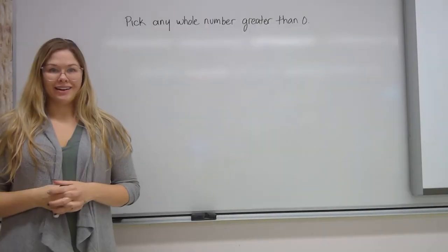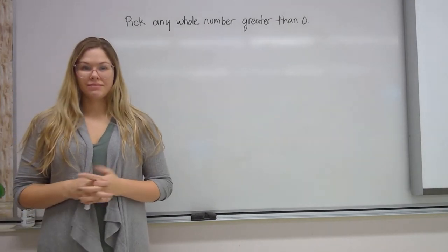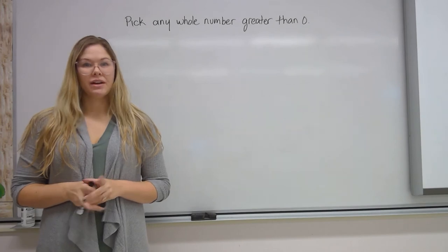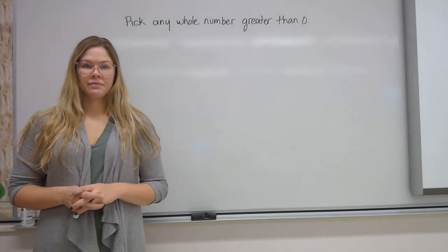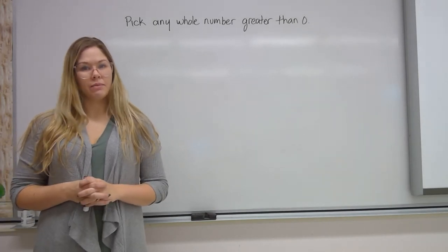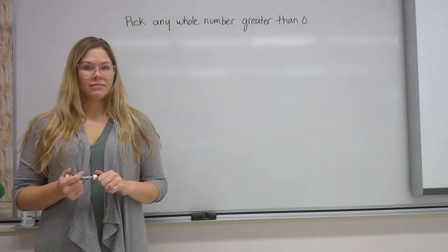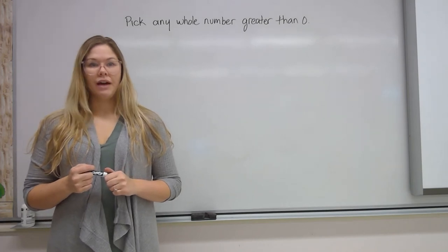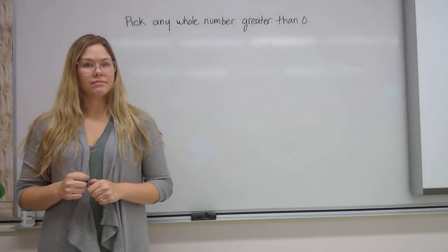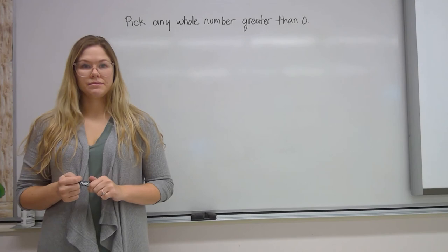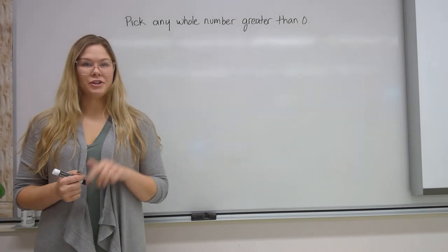Let's try another example. Pick any whole number greater than 0. Got something? Here's what I need you to do: take your number and add 5. Once you've added 5, take that new number and multiply it by 2. Then take that new number and subtract 10. After you subtract 10, divide by the original number you started with. What number do you have? Is it 2? It should be — no matter what number you picked, I bet your answer was 2.